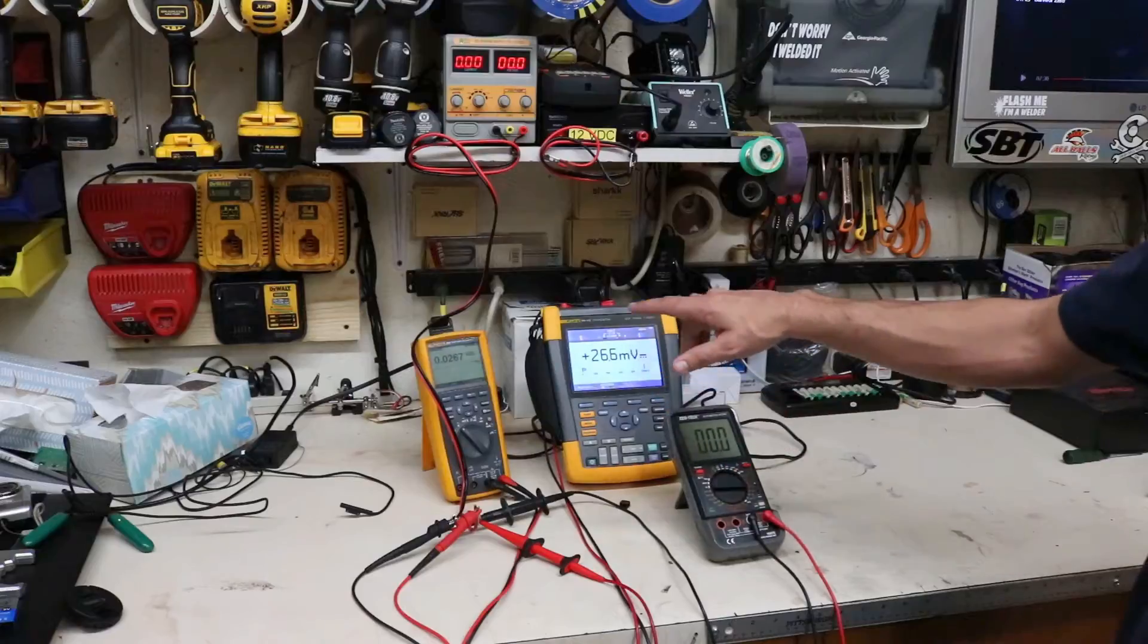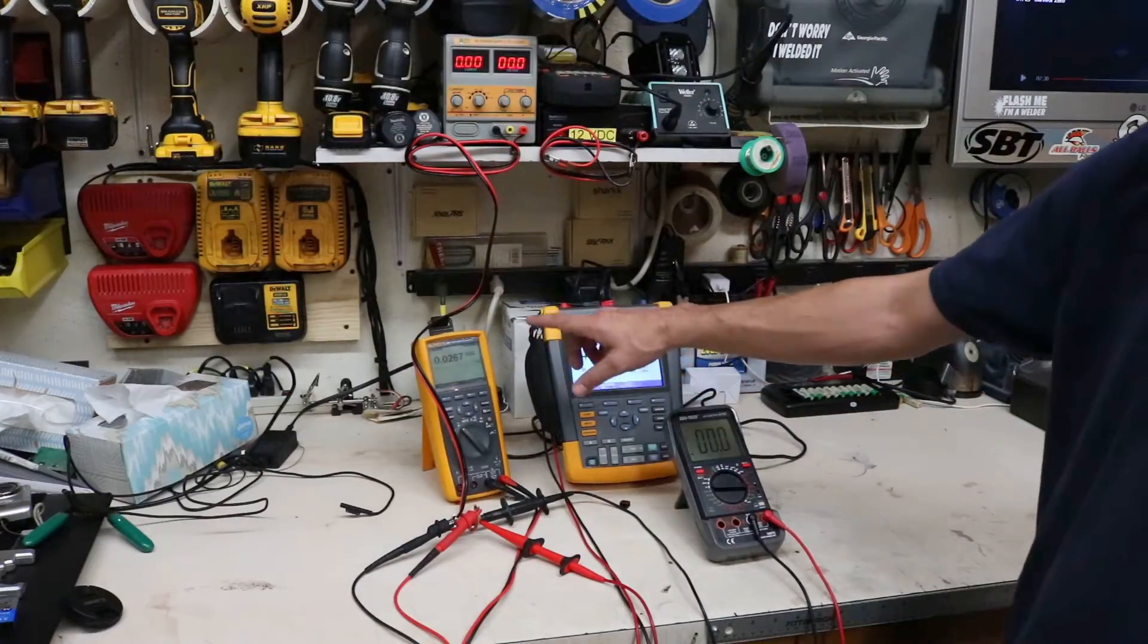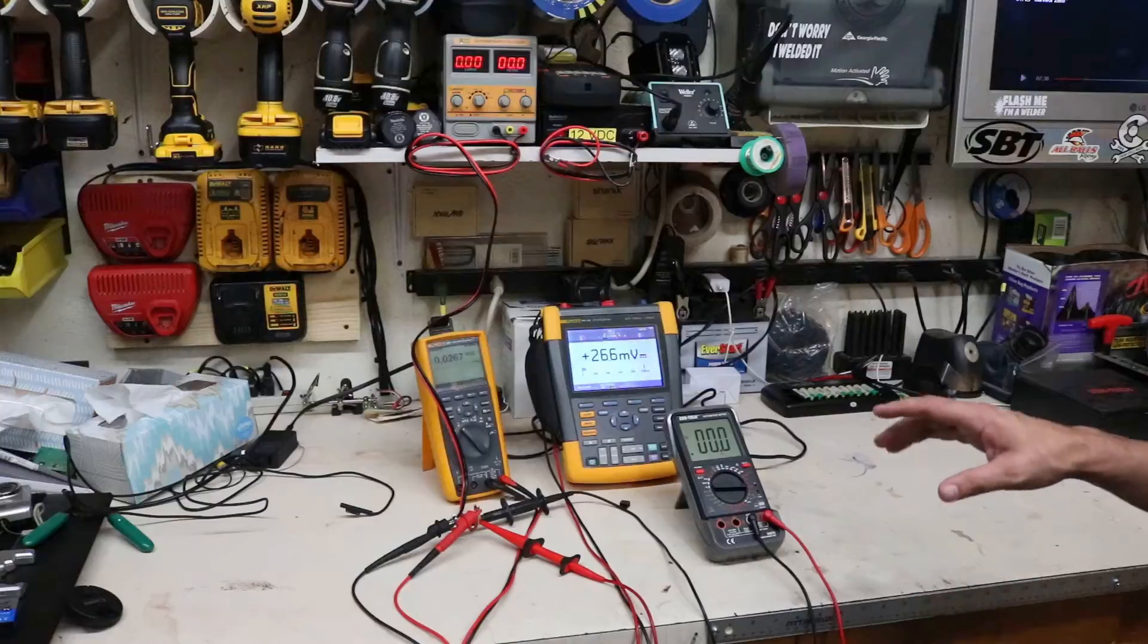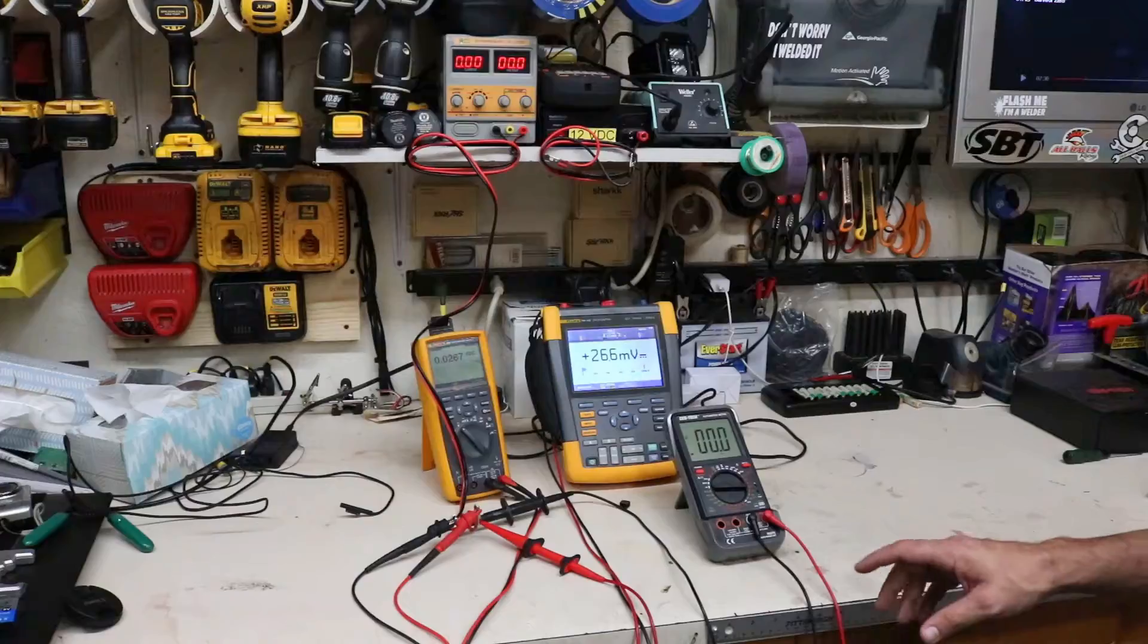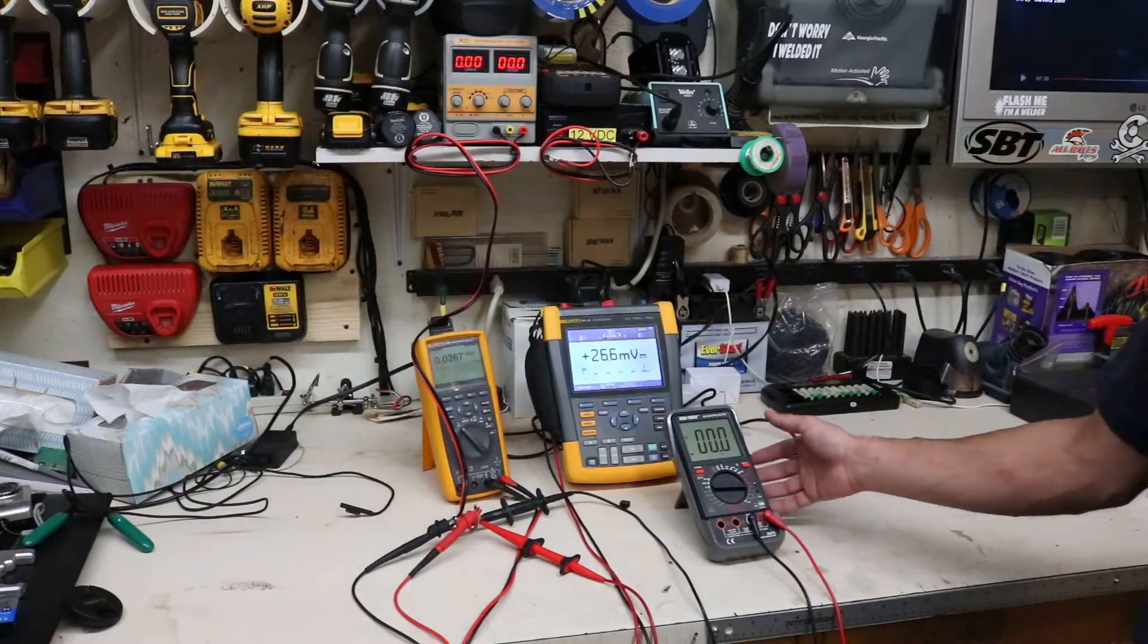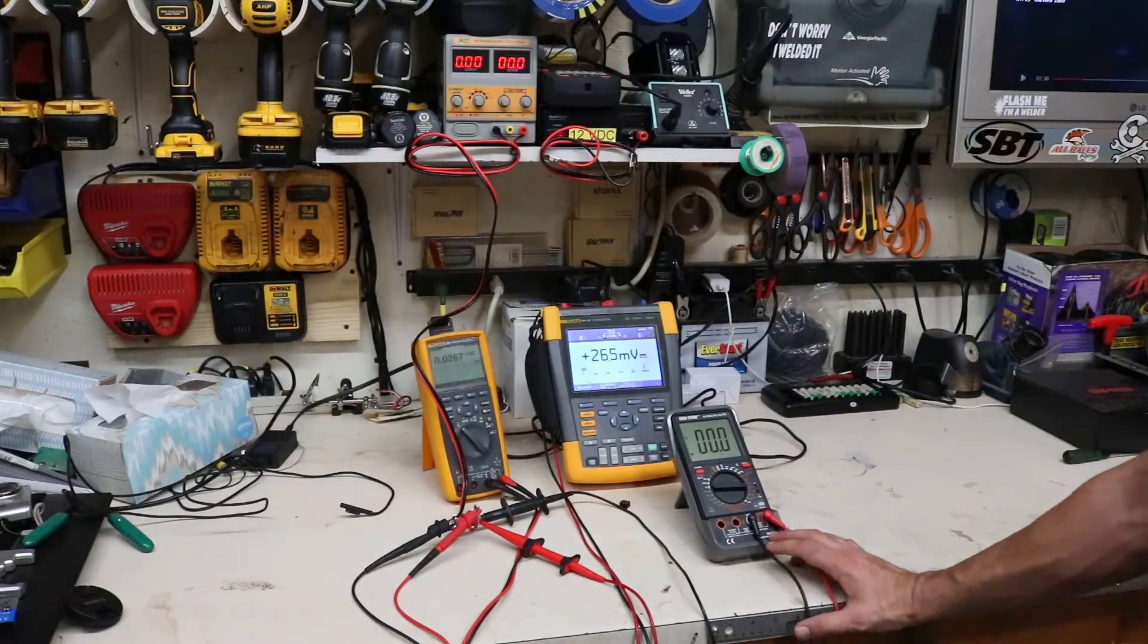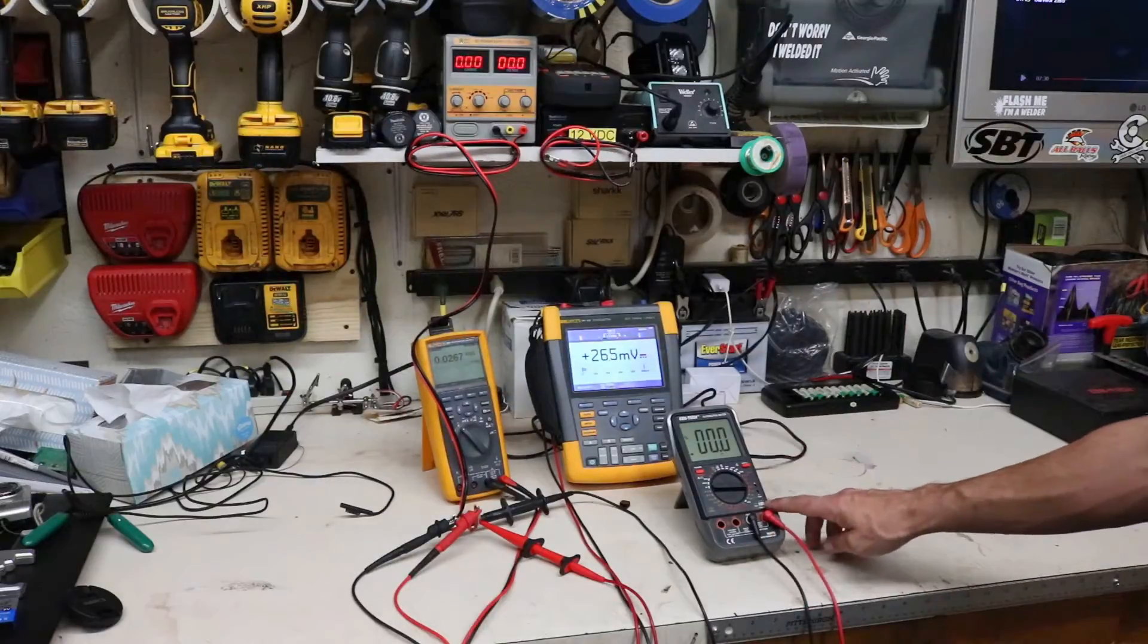Both of these Flukes, my Fluke oscilloscope 190-102 and my Fluke 287 process meter, get calibrated annually. I send them out to Fluke to get them calibrated, so I know they're pretty close dead-on the money. This one here is a Centech auto meter, running about $30 to $40 at Harbor Freight. This particular one is part number 95670.